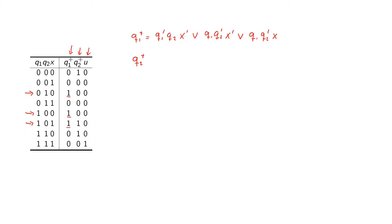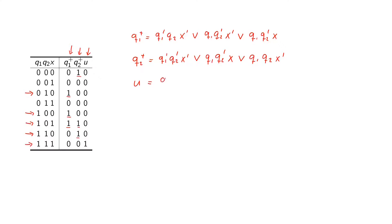For our Q2-plus function we do it in a similar way; we also have three ones to define. The first term is Q1-prime · Q2-prime · X-prime, the second is Q1 · Q2-prime · X, and the third, found in the next row, is Q1 · Q2 · X-prime. For the output function U we have only one one in the truth table, and it is given as Q1 · Q2 · X.